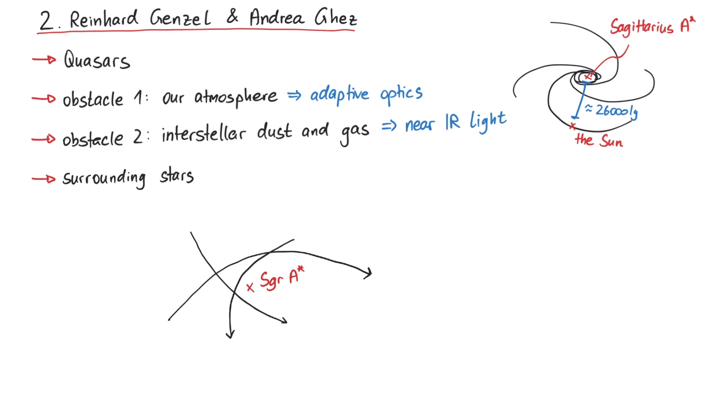While observing many stars, one particular star caught their eyes. They named it S2, and it completes its orbit in less than 16 years. This means it was possible to observe the entire orbit of S2, mapping its positions and velocities. By observing the position of S2 and the other stars, the researchers concluded that there must be some very massive object which holds all other stars on their path.